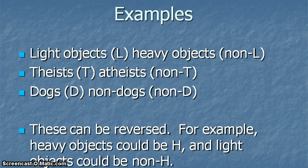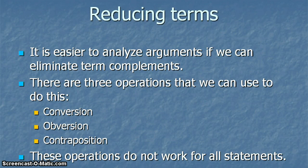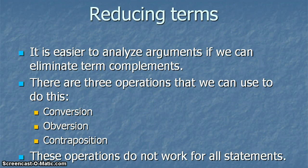The point is that the relationship between a letter and non followed by the letter is completely opposite. Basically what we're trying to do is reduce terms — we want to get rid of the non's. Every time we look at a statement with a non in it, we want to figure out how to get rid of that. There are basically three different operations we can use. We don't always do all three — we never do all three — sometimes we do two, and sometimes we can just do one to get rid of the non's, depending on where the non is. Obversion will work for all statements, but conversion and contraposition don't.